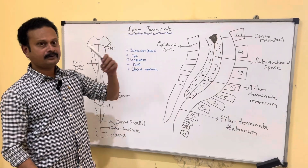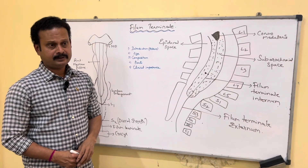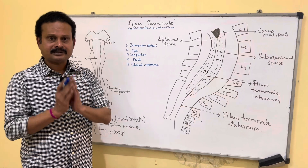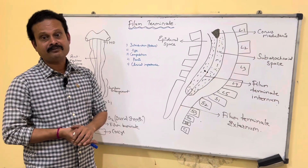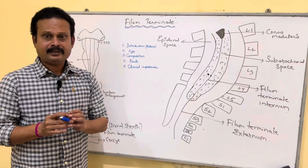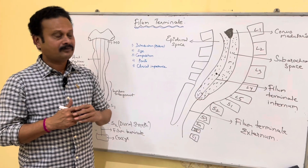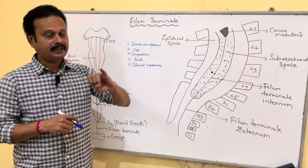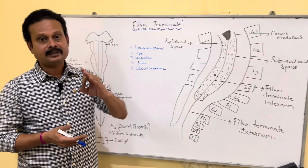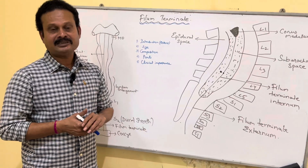Hello, let us now know what is filum terminale. It is one of the extensions or processes or special parts of the pia mater of the spinal cord. Spinal cord extensions or processes are few. One of them is filum terminale, another is subarachnoid septum, the third is ligamentum denticulatum, and the fourth is linea splendens.